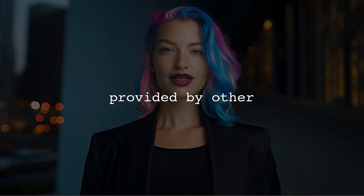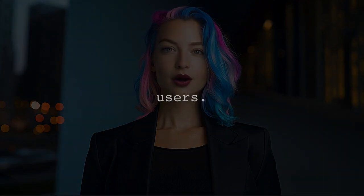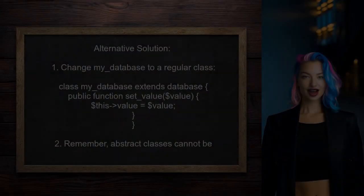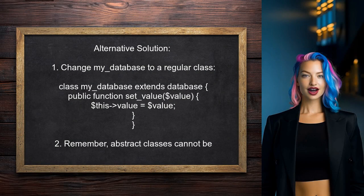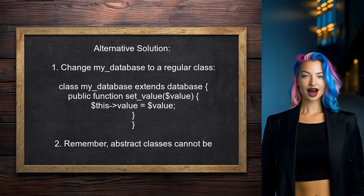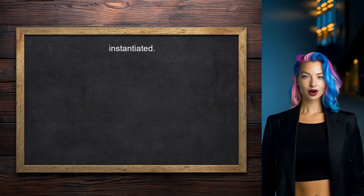Now let's look at the answers provided by other users. An alternative solution suggests that your class should not be abstract. Instead, you can simply extend the database class without the abstract keyword. This allows you to instantiate MyDatabase and use the set_value method to modify the protected value.